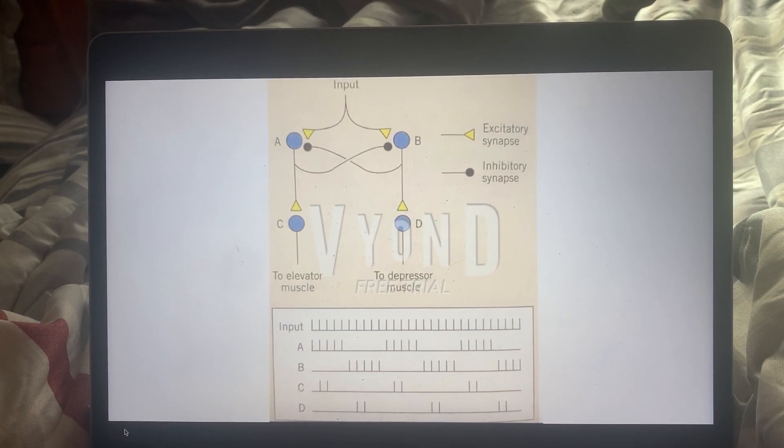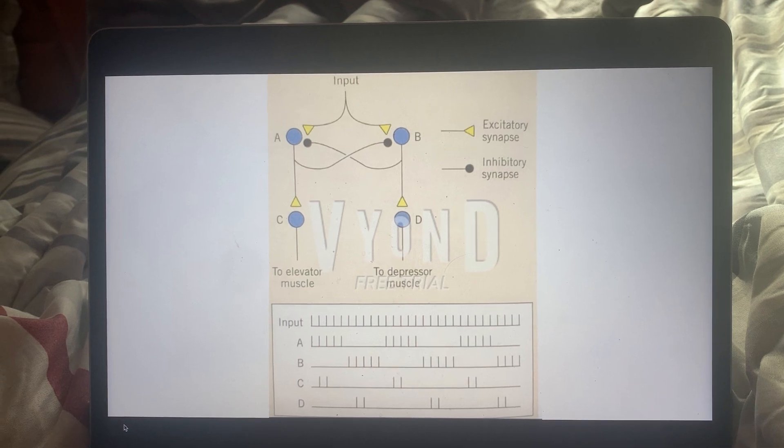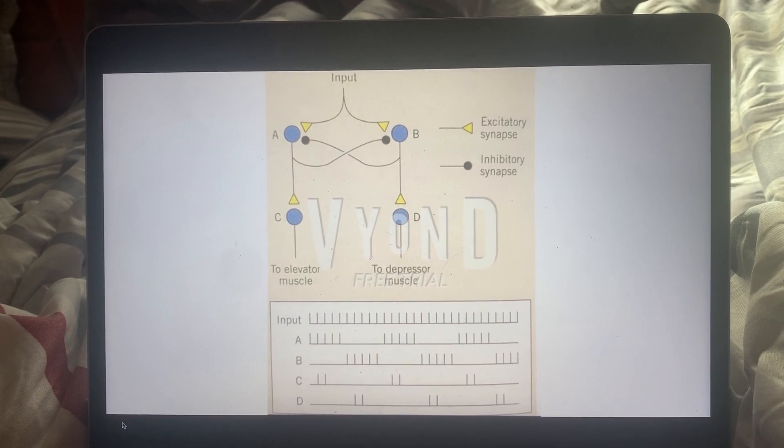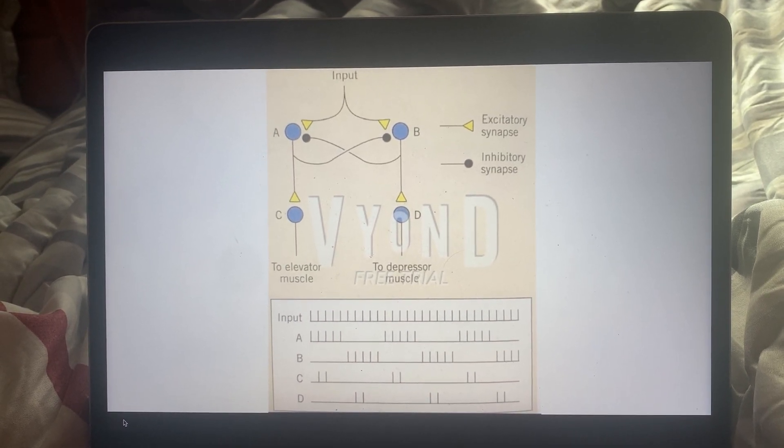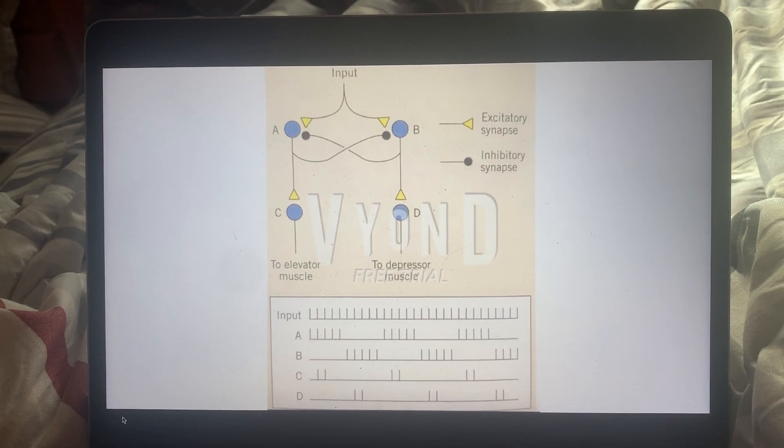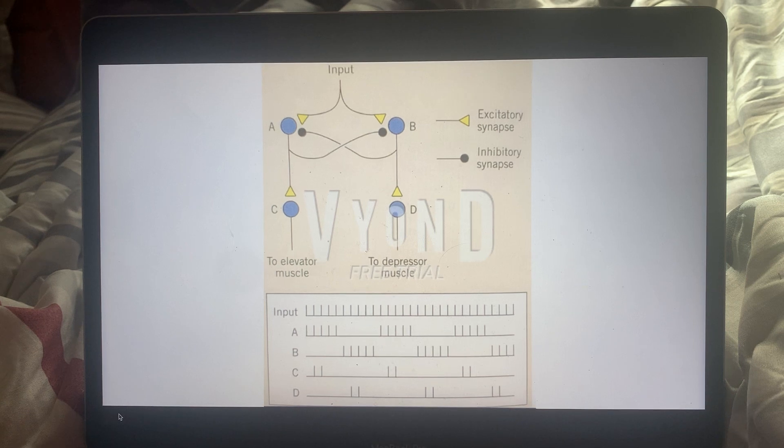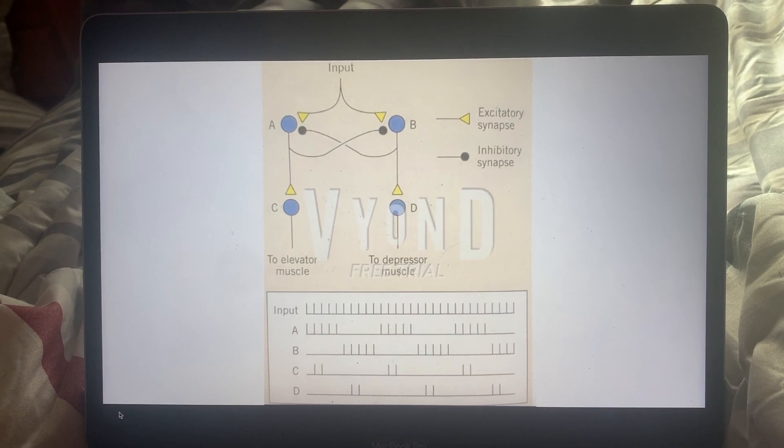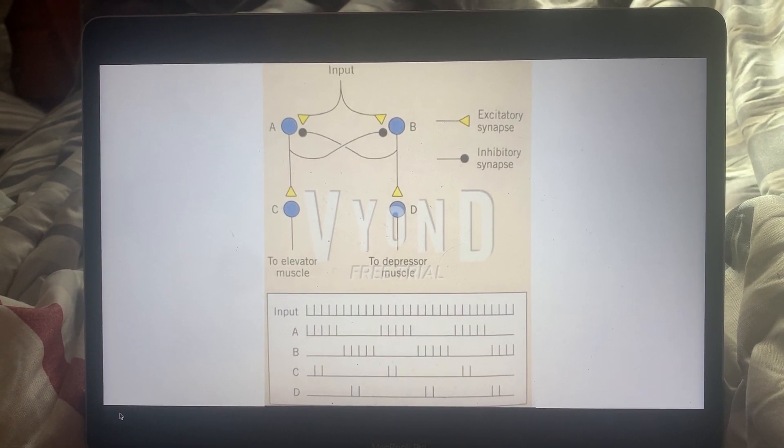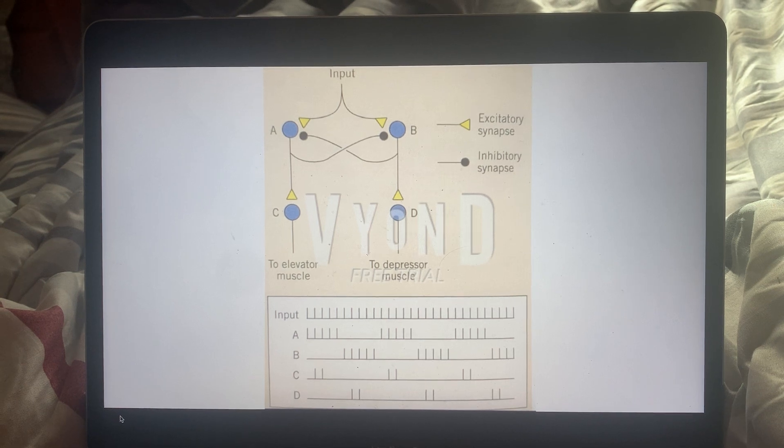Over time, this negative feedback loop - where when one gets activated, it will eventually become fatigued and the other one will be less inhibited and therefore more stimulated - allows for there to be an equilibrium in terms of when the elevator muscle is activated and the depression muscle is activated.